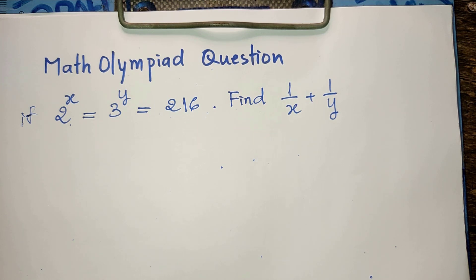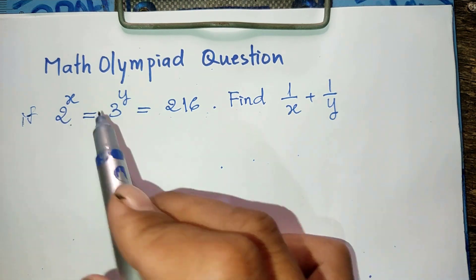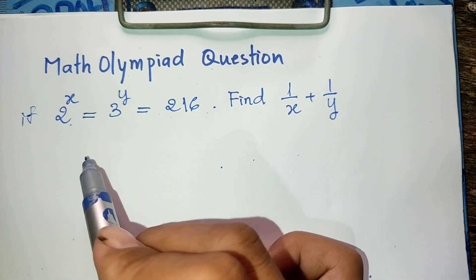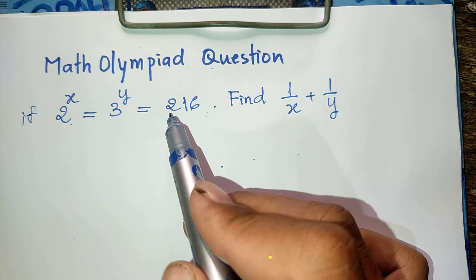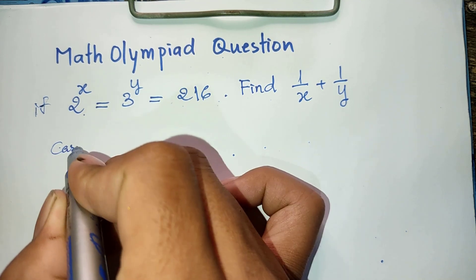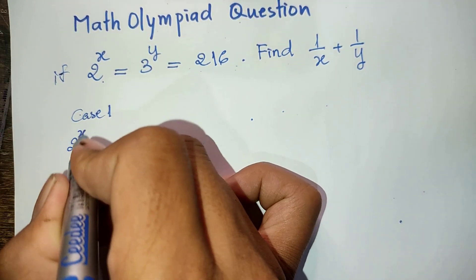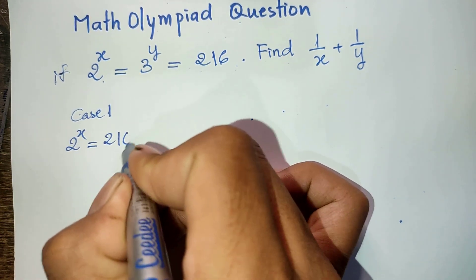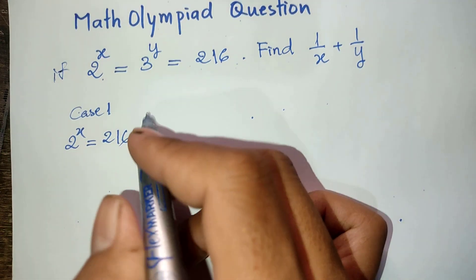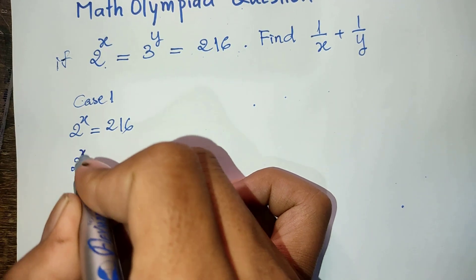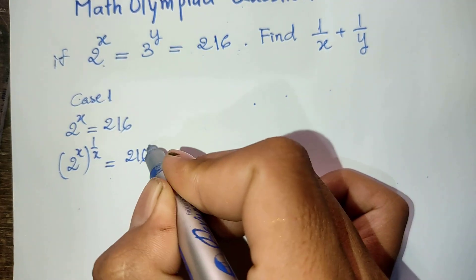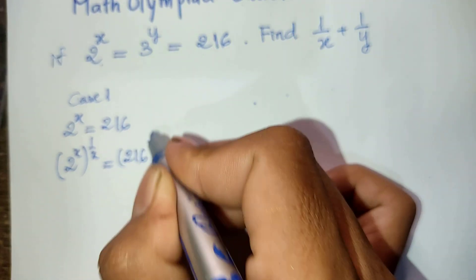Now let's go to the solution together. Look at this: 2 power 8 equals 3 power y equals 216. I take the first part: 2 power 8 is equal to 216. I raise both sides of this equation to the power 1 divided by 8 — so 2 power 8, and then raised to power 1 divided by 8, is equal to 216 raised to power 1 divided by 8.